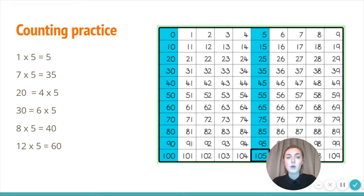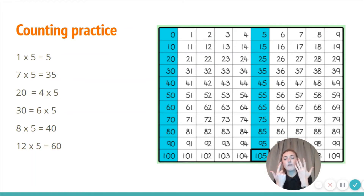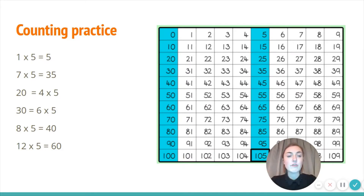Seven times five. I can count in fives — I'm going to use seven fingers and count in fives: five, ten, fifteen, twenty, twenty-five, thirty, thirty-five. Tick or fix your answer, well done everybody.